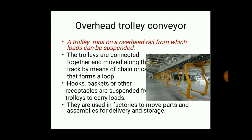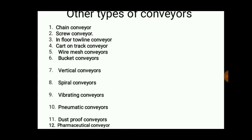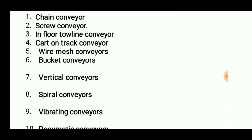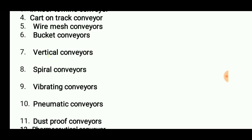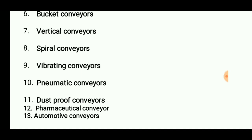Overhead trolley conveyors are also useful when assembly operations need to be performed underneath a product. Other types of conveyors include chain conveyor, screw conveyor, in-floor towline conveyor, cart-on-track conveyor, wire mesh conveyor, bucket conveyor, vertical conveyor, spiral conveyor, vibrating conveyor, pneumatic conveyor, dustproof conveyor, pharmaceutical conveyor, and automotive conveyor.